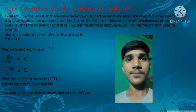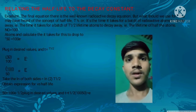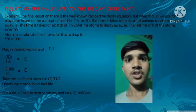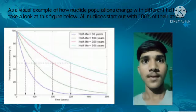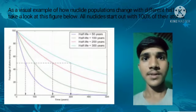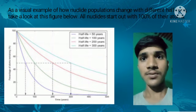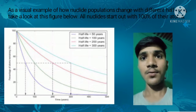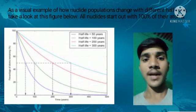Taking the natural log of both sides gives an expression for lambda versus the half-life time, and the resulting relation is shown below. As a visual example of how nuclide population changes with different half-lives, take a look at the figure below. All nuclides start out with 100% of their atoms.